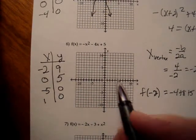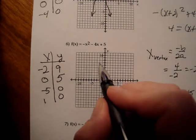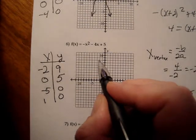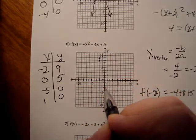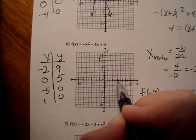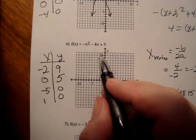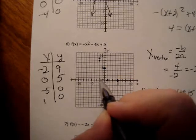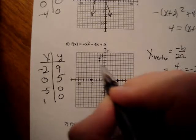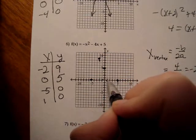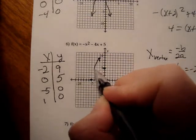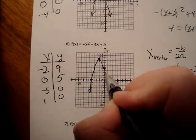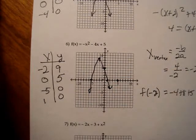Let's plot all the points we've got. Negative 2, 9, 0, 5, 1, 0, and negative 5, 0. Those four points. And now I connect them. This is a parabola that opens downward because the leading coefficient is negative 1.